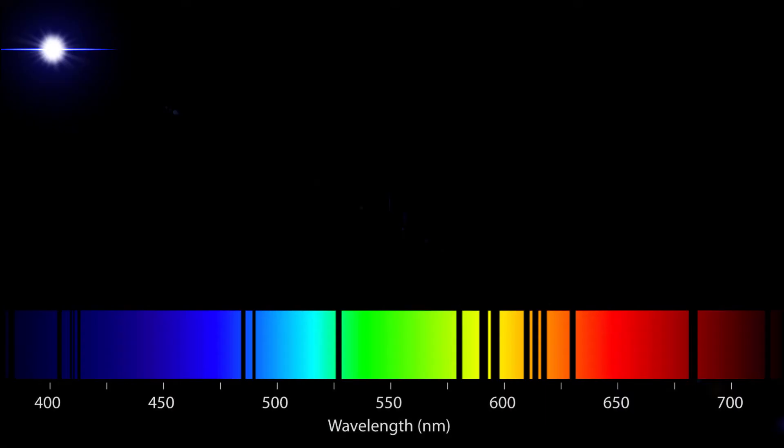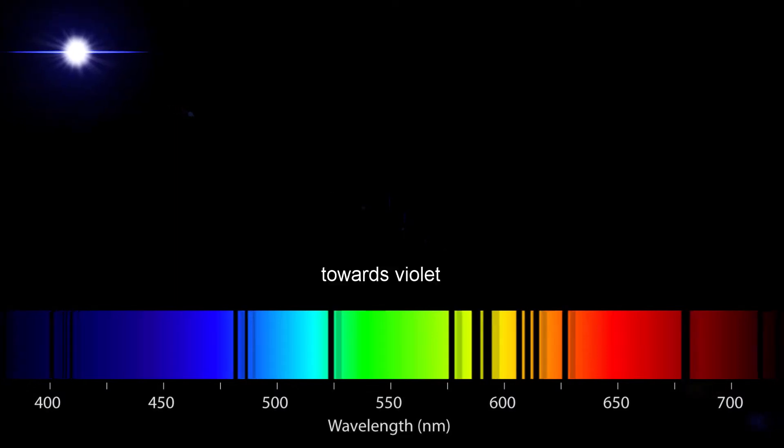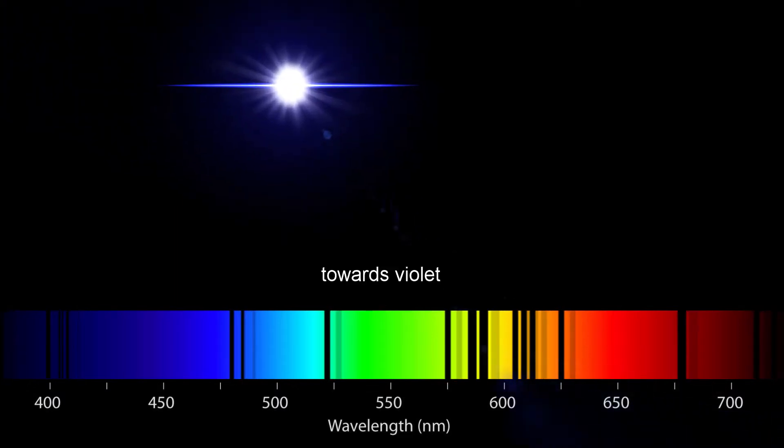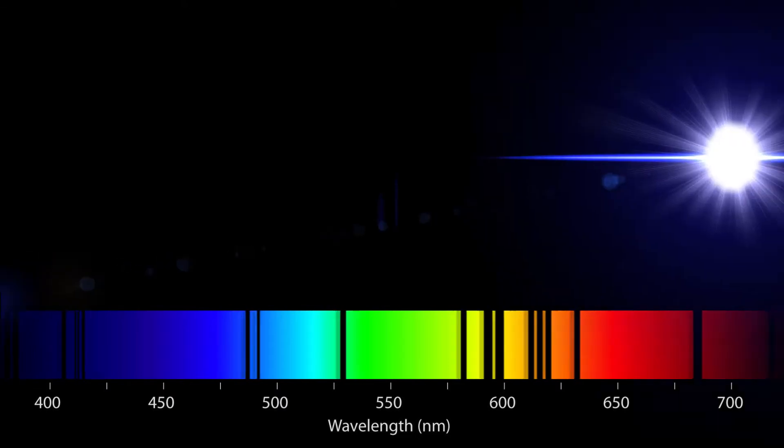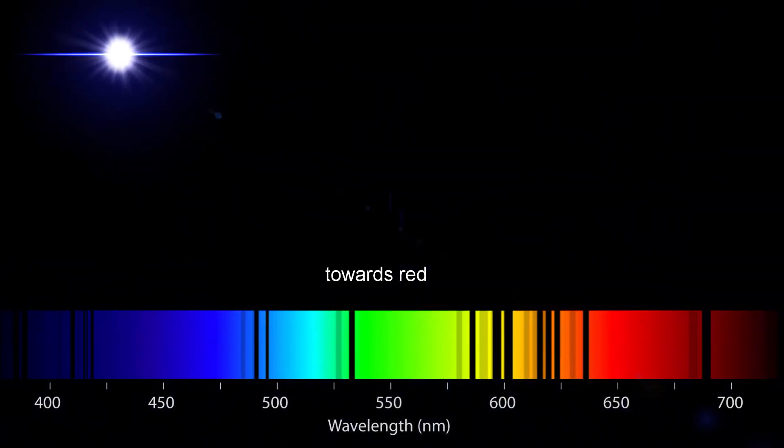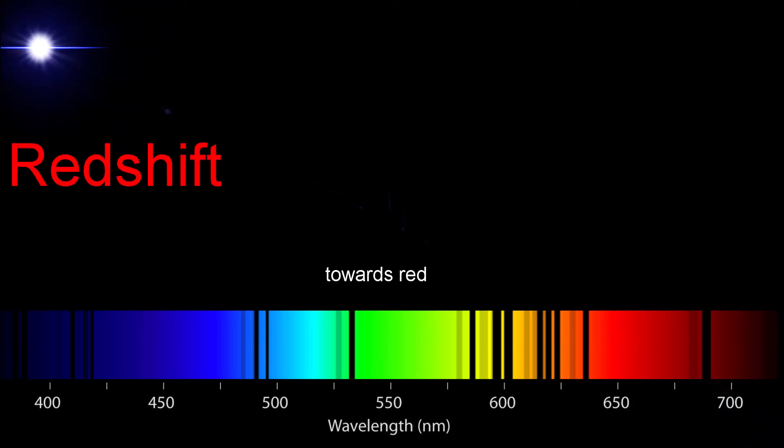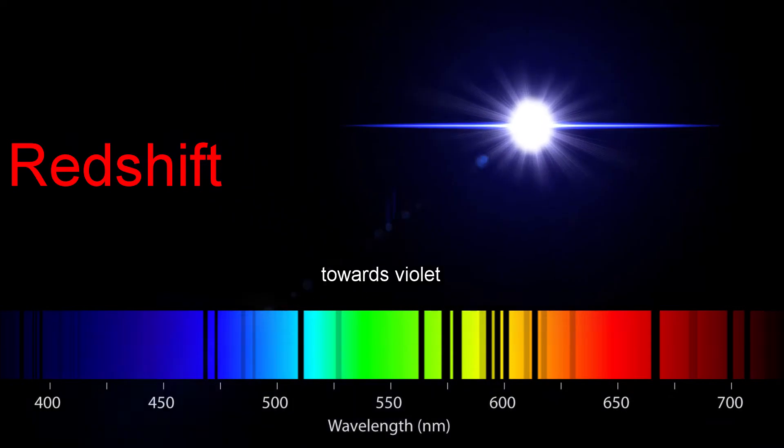Now, an interesting thing happens when a light source that's moving relative to a detector is detected through a prism. We'll still see the colors and Fraunhofer patterns, but the patterns will be shifted towards the violet or red. The amount it's shifted will depend on how fast the light is moving towards or away from us, respectively. This is called redshift. It's similar to the way the sound of a car horn changes as the car passes you.